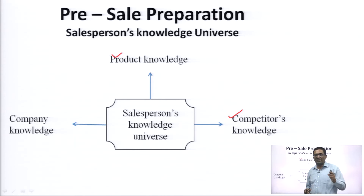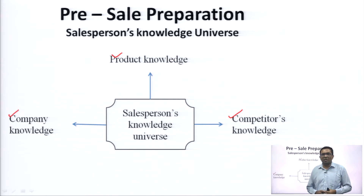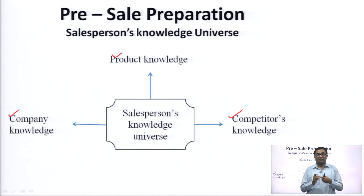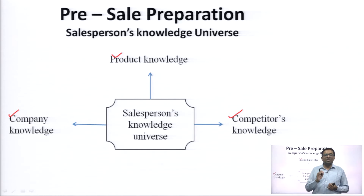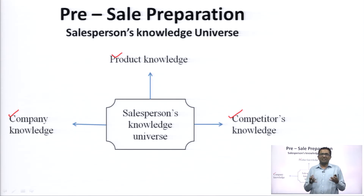You should also know what is the market behavior — how the market is buying. Is the product seasonal? Is there any specific thing in the market which customers are demanding? What are the policies which your competitors have? The third thing in this knowledge universe is company knowledge, which comprises your own company's history, finances, management, size of the company, and its various policies and procedures in reference to sales. This gives tremendous confidence and the salesperson looks in control when sitting in front of a customer.